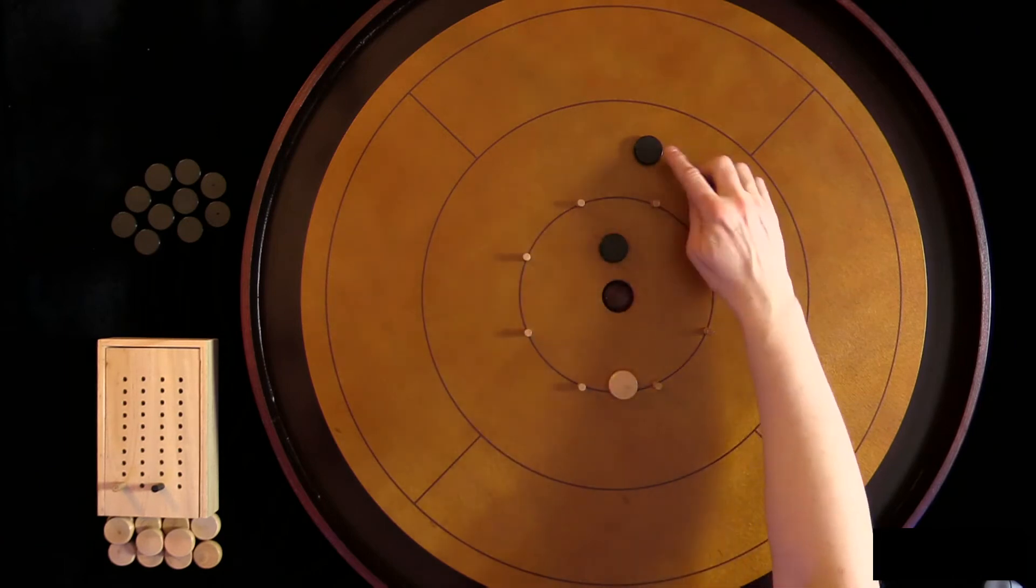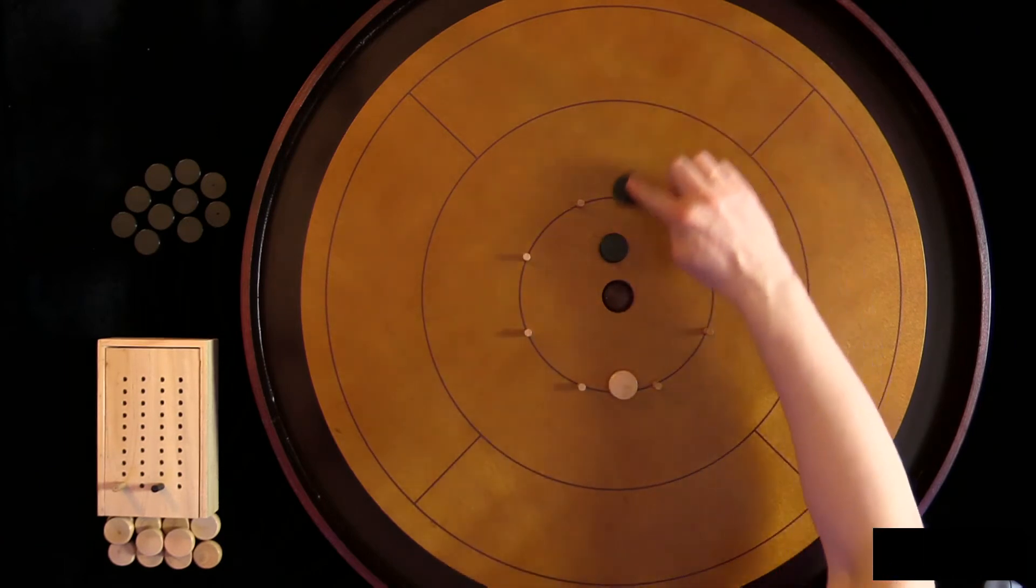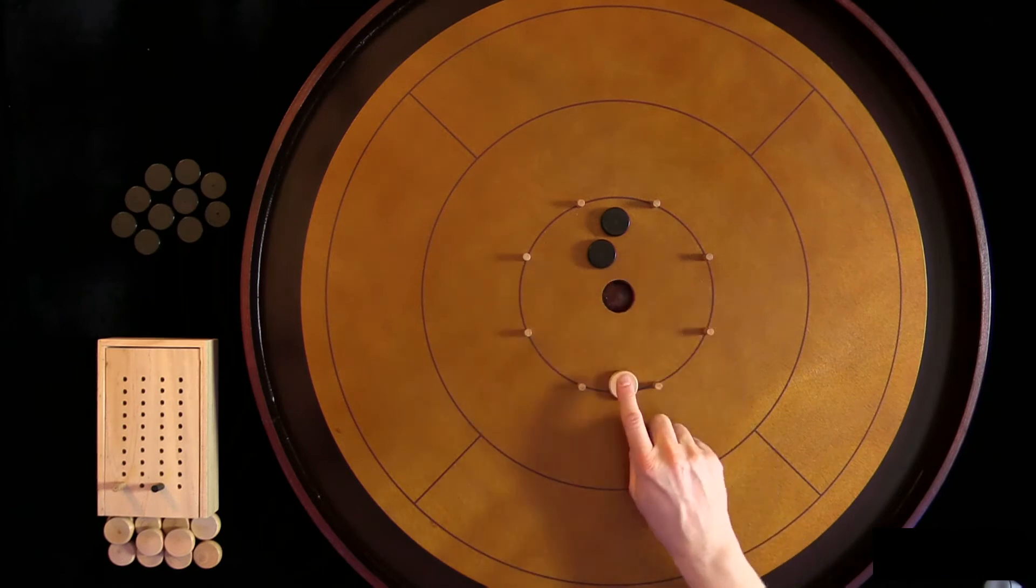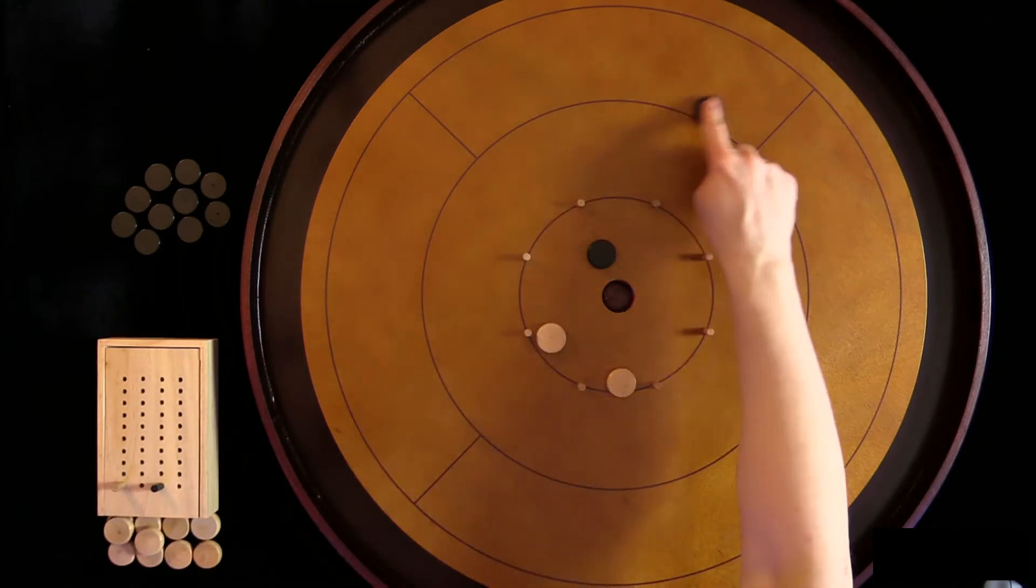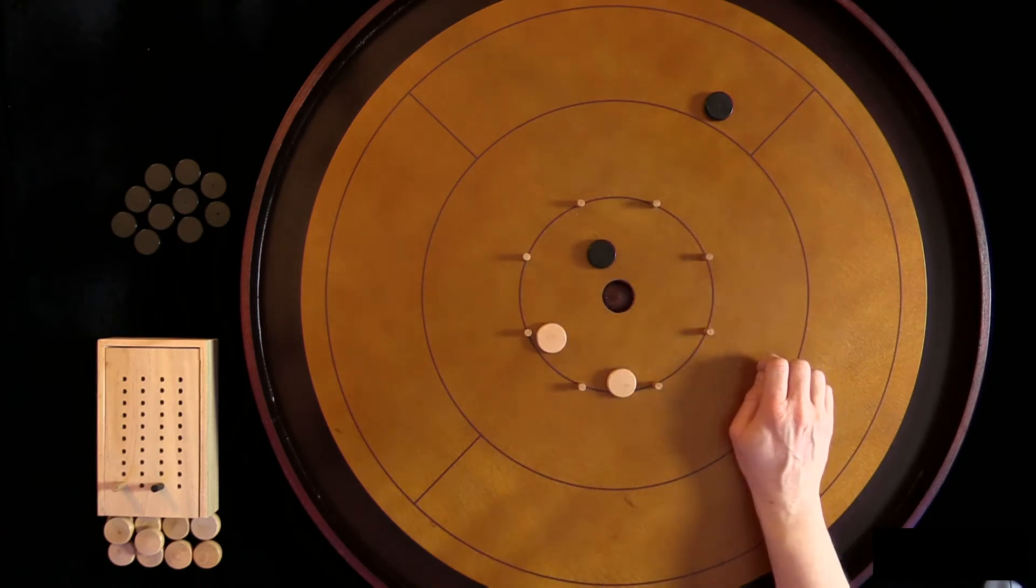So whatever the case is, when she flicks she must have one of her pieces hit one of my pieces. I could have more than one piece in here. She must hit at least one of them to be a valid play.